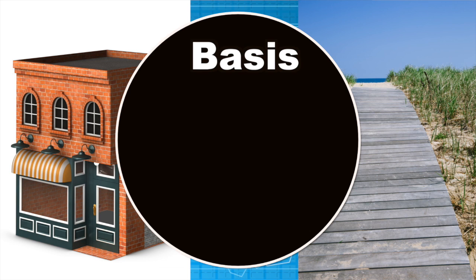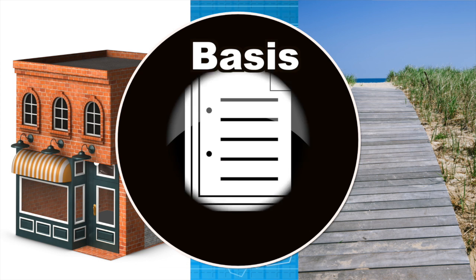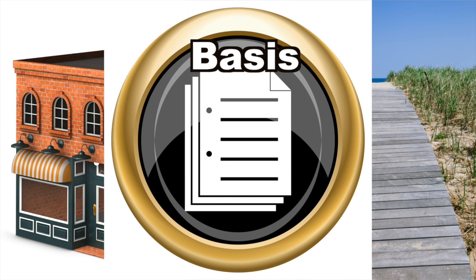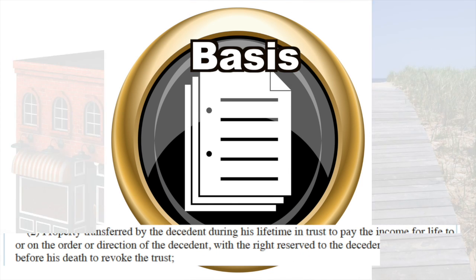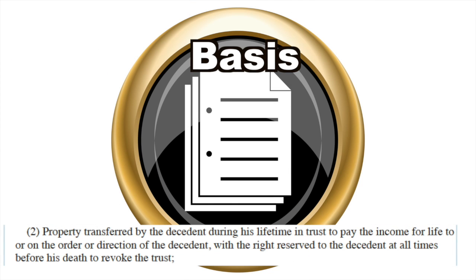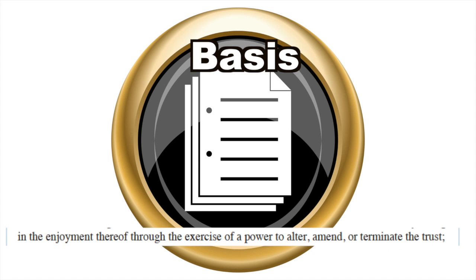People can own property in other ways and still have the basis value of the property stepped up upon death. Property owned in a revocable trust gets stepped up basis because the creator of the trust keeps a power to revoke the trust, or a power to alter, amend, or terminate the trust during his lifetime.